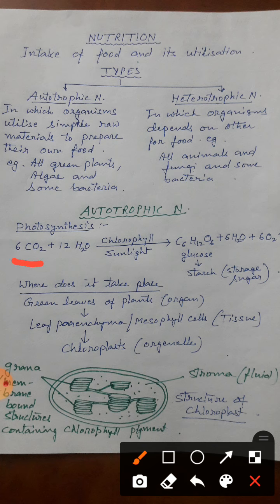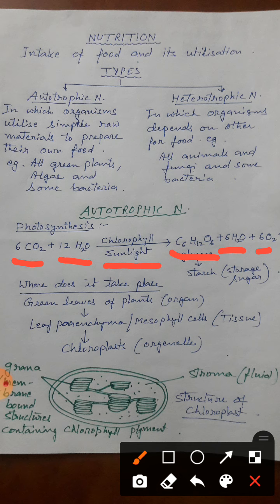Carbon dioxide reacts with water in presence of chlorophyll and sunlight. It prepares glucose — formula of glucose is C6H12O6 — six water molecules and six oxygen are released. Ye jo six oxygen release hua, ye bahar nikal jayega as byproduct. Aur ye jo glucose hai, woh deposit ho jayega starch ke roop mein. Starch is called the storage sugar in plants and glucose is the end product of photosynthesis.